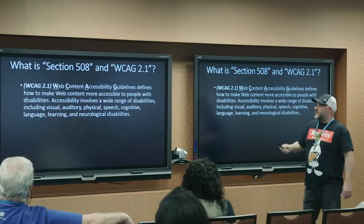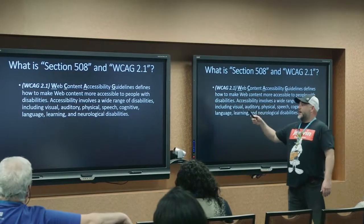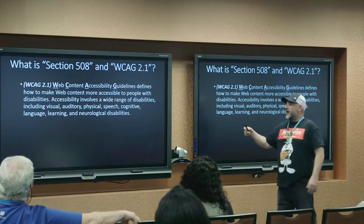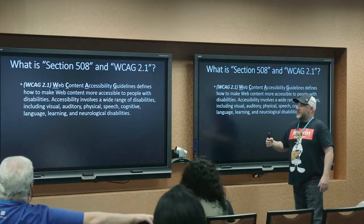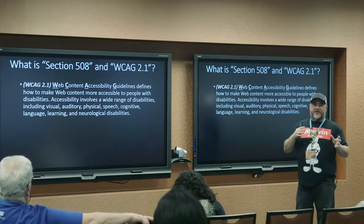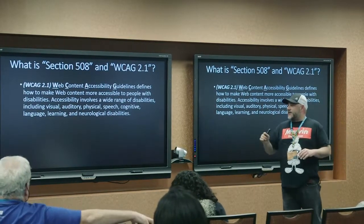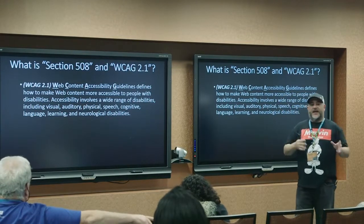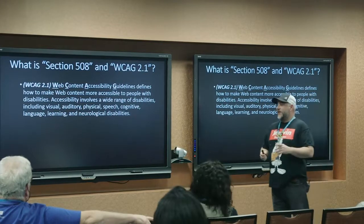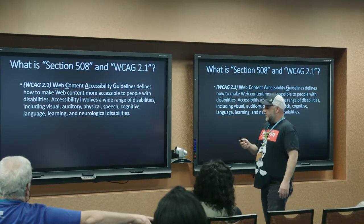What is Section 508 and WCAG? WCAG — the Web Content Accessibility Guidelines — is basically the worldwide criteria put together for websites. They break it down into three different levels: A, AA, and AAA. Section 508 says you have to be A and AA compliant of WCAG. AAA compliance is very difficult, if not impossible, in some scenarios to obtain.